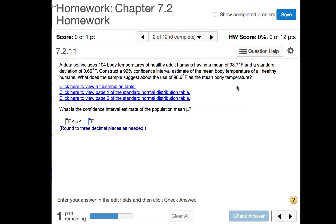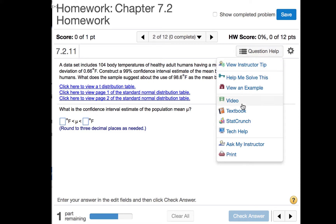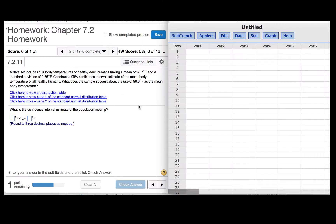We'll begin by clicking question help and then StatCrunch. We are going to construct a confidence interval about a mean and use the sample standard deviation as an approximation for the population standard deviation. So that means we will use the t-distribution.